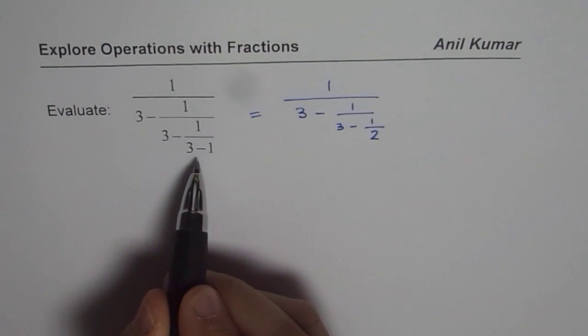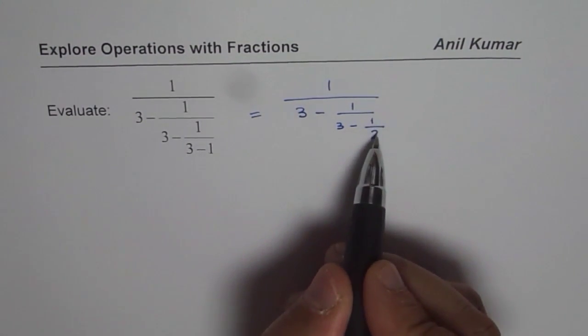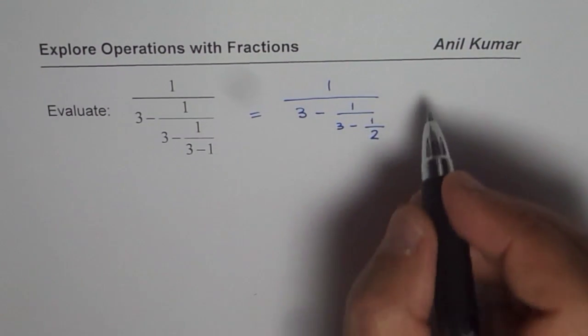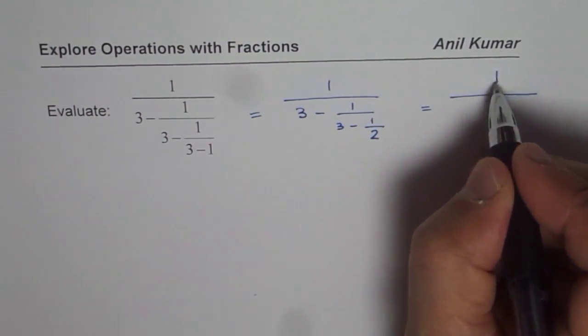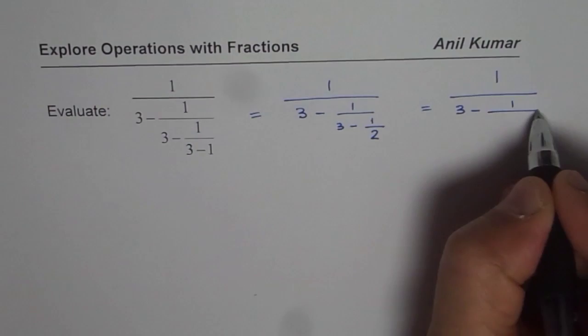Start from the lowest level. Now we have half here. Now we should find a common denominator to do this subtraction. So now we can write this as 1 over 3 minus 1 over.